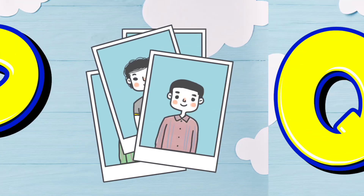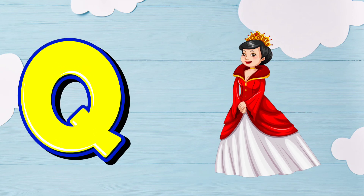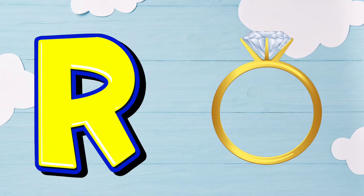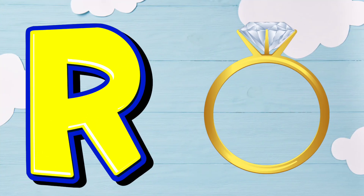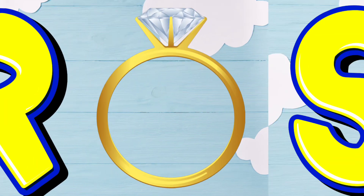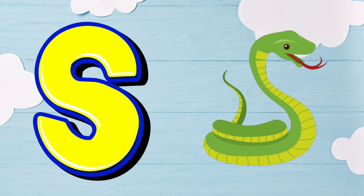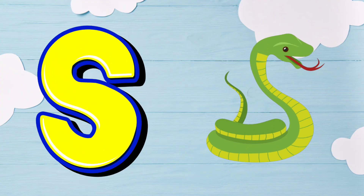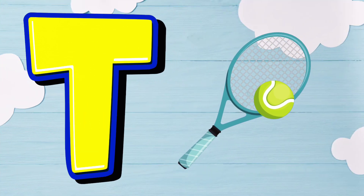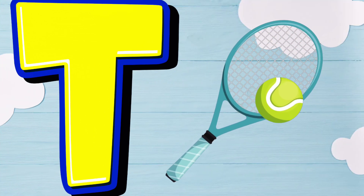Q is for Queen. Q. Queen. R is for Ring. R. Ring. S is for Snake. S. Snake. T is for Tennis. T. Tennis.